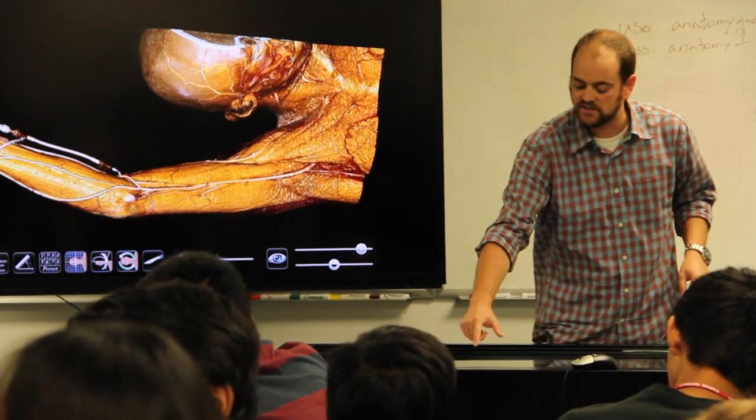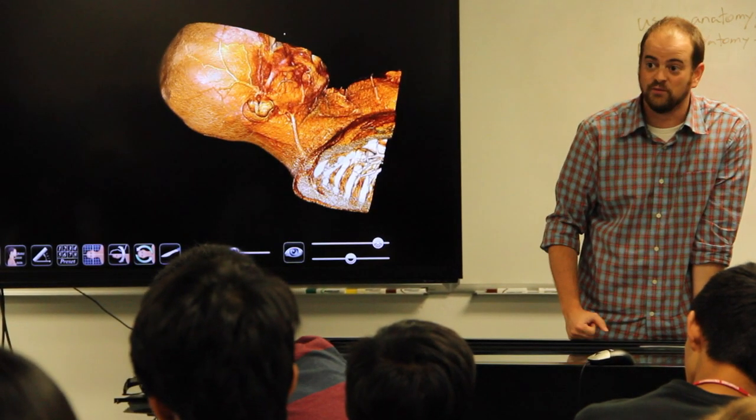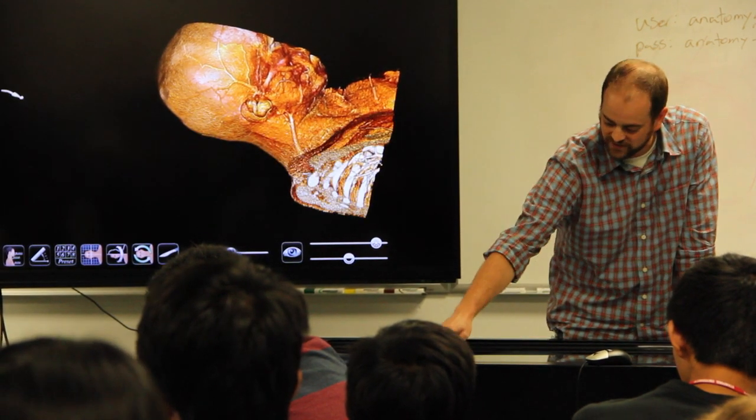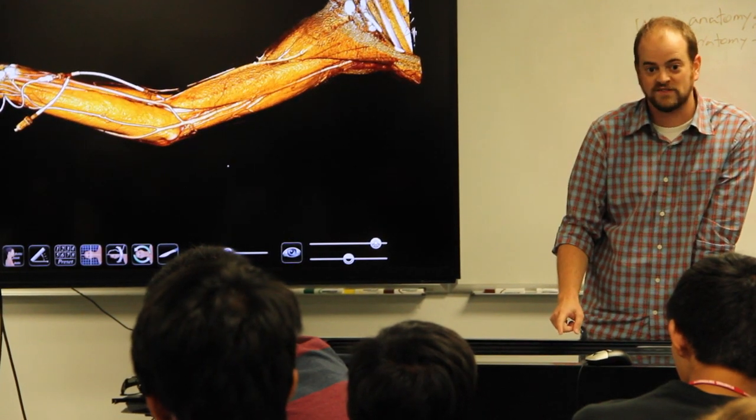You can also make cuts into this with this scalpel tool. So we can remove the upper limb. Whoops, I wanted the upper limb. I don't want the head and neck. I'll just switch that. And now I've got the upper limb by itself.